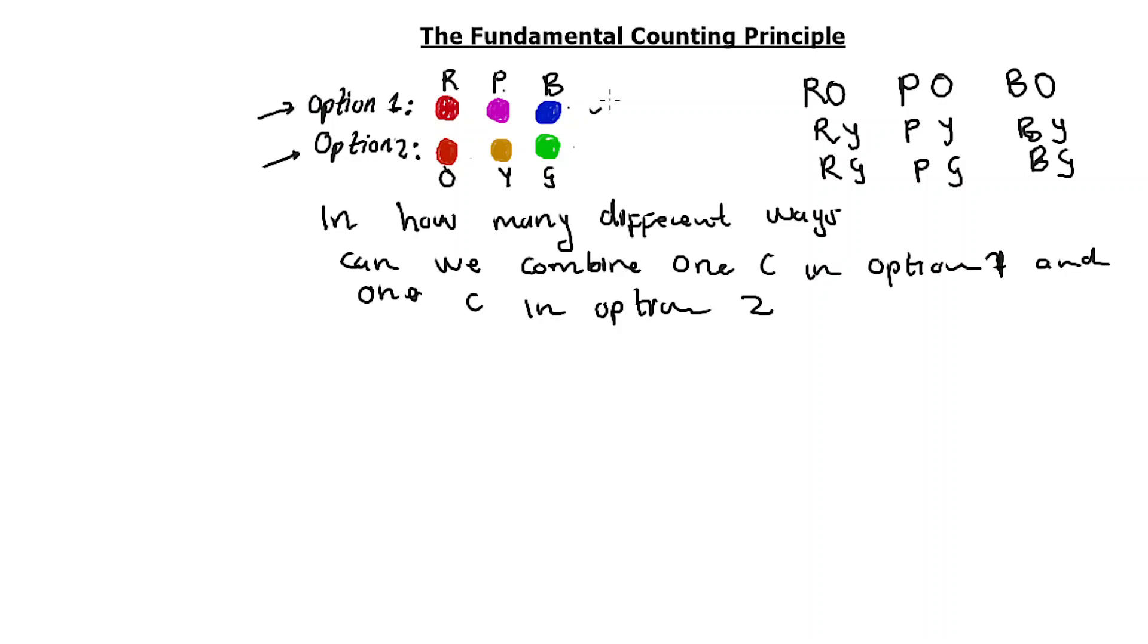So these are the different ways we can take one color in the first option and take another color in option number 2. You can only pick one here, you can only pick one there. So counting these combinations: 1, 2, 3, 4, 5, 6, 7, 8, 9. There are 9 in total. So the answer here is going to be 9.